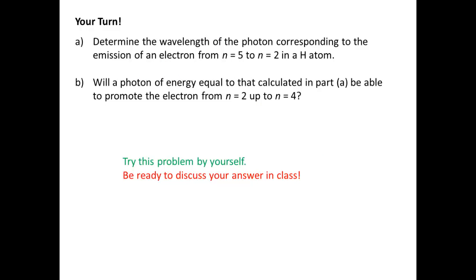Now I want you to try this one: determine the wavelength of the photon corresponding to the emission of an electron from n equals 5 to n equals 2 in a hydrogen atom. This combines the two steps we just did. Notice we are calculating emission, so think about the sign of your energy when going down in energy levels. The second question asks: will a photon of energy equal to that calculated in part A be able to promote the electron from n equals 2 up to n equals 4? Try these by yourself and we'll discuss them in class.